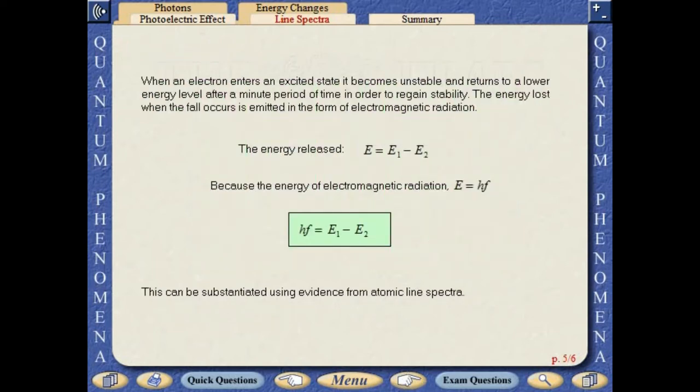When an electron enters an excited state, it becomes unstable and returns to a lower energy level after a minute period of time in order to regain stability. The energy lost when the fall occurs is emitted in the form of electromagnetic radiation.